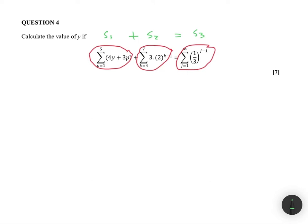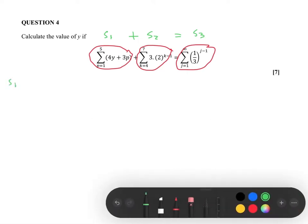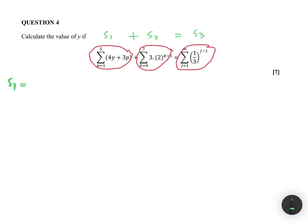So S1 is the first sum. We can see that we go from p equals one to five, so you substitute one into the equation, substitute two, until you substitute five. If I substitute one, the equation is going to be: p equals one, so four y remains as it is, and then plus three times p — since p equals one, this will just be plus three.